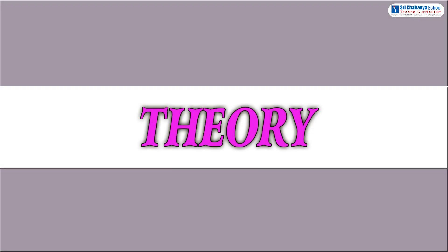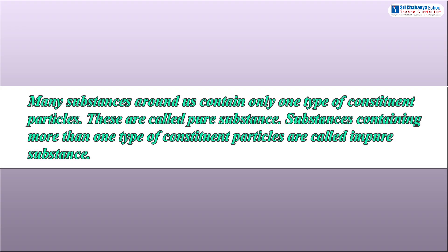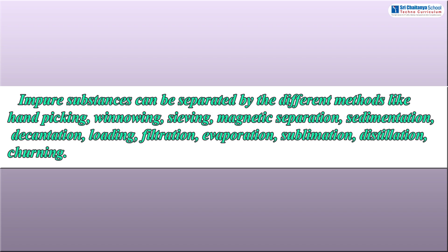The theory of this experiment is: many substances around us contain only one type of constituent particles — these are called pure substances. Substances containing more than one type of constituent particles are called impure substances. Impure substances can be separated by different methods like hand picking, winnowing, sieving, and magnetic separation.